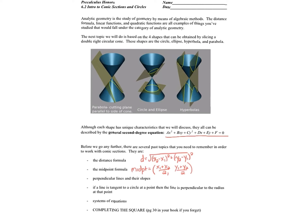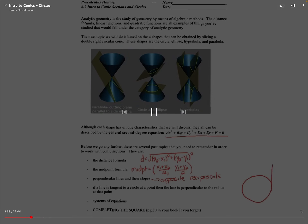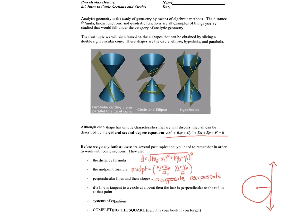We also need to remember the relationships between perpendicular lines and their slopes — perpendicular lines have slopes that are opposite reciprocals of one another. From geometry, if you have a line tangent to a circle — meaning it intersects the circle at exactly one point — the radius drawn to the point of tangency and that tangent line are perpendicular. We're also going to be solving systems of equations and completing the square, which comes up a lot throughout this chapter.